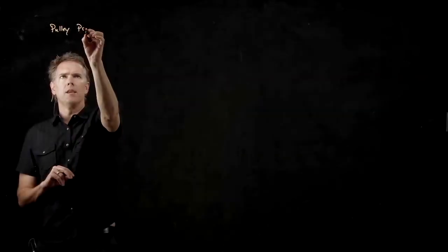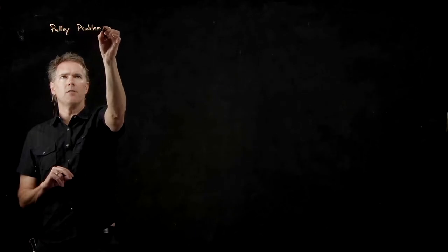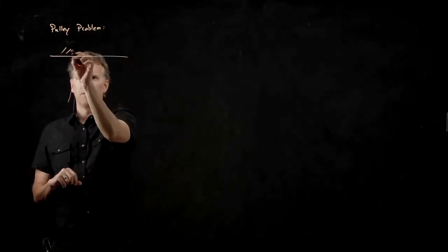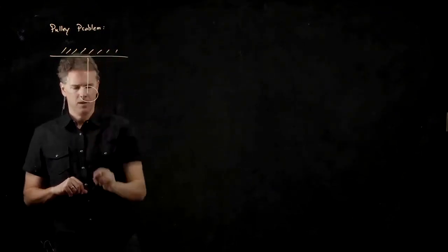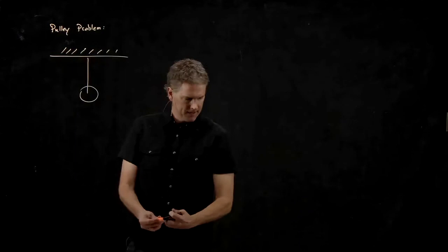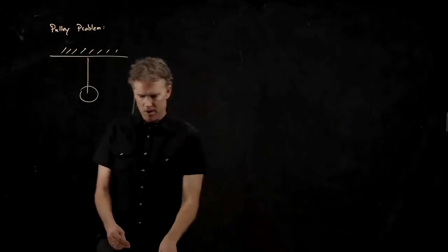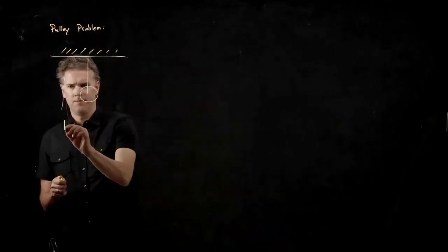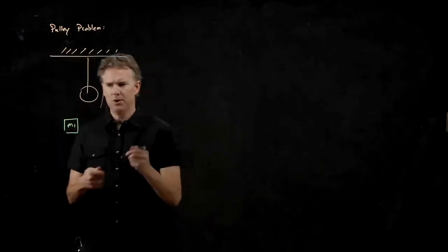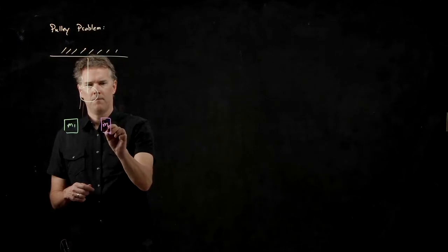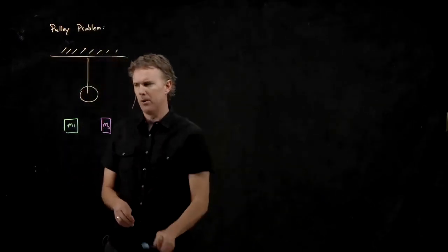This is the pulley problem, and the idea is the following. We're going to have a pulley hanging from the roof, and we're going to take a block M1 and a block M2, and we're going to tie them together with a rope.